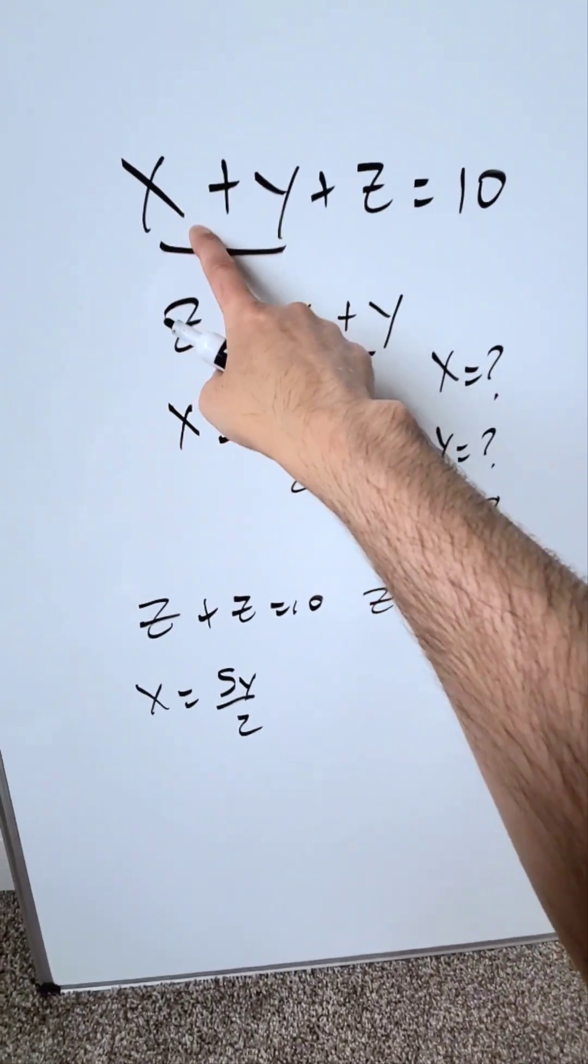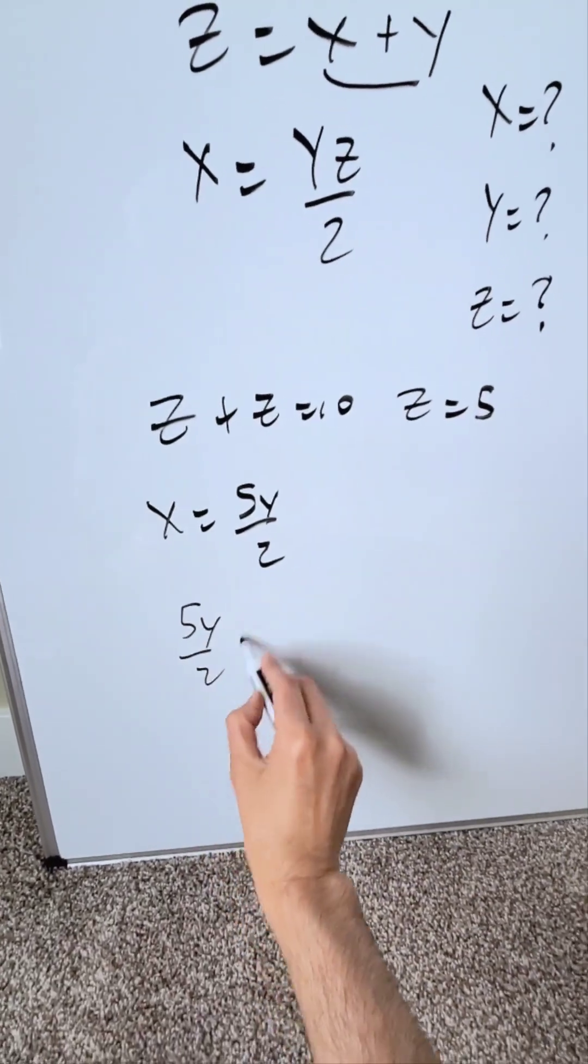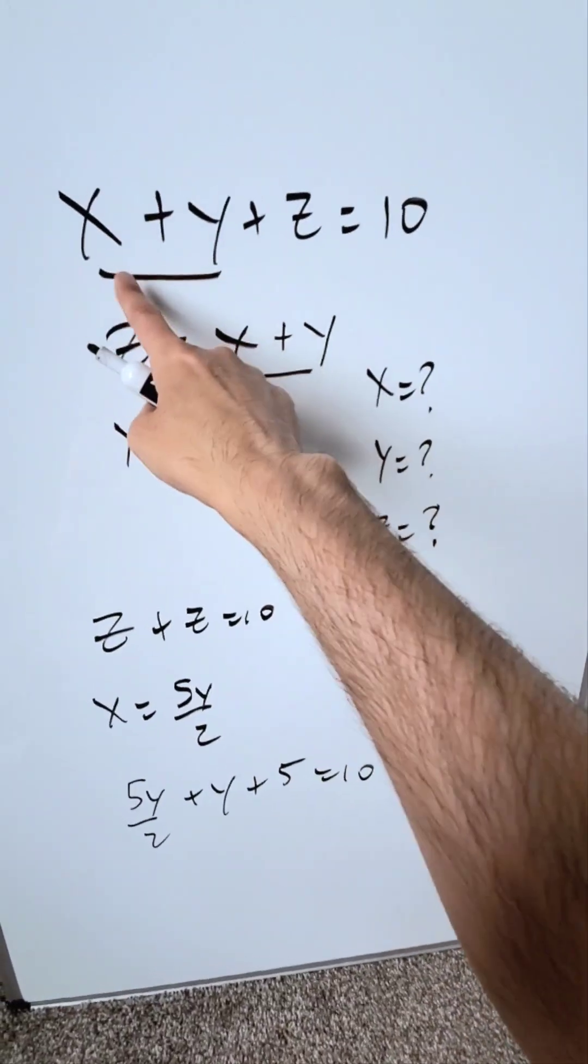I'll bring that right over here along with the value of z. I have here 5y over 2 plus y plus 5 is equal to 10. I brought these items into the first equation.